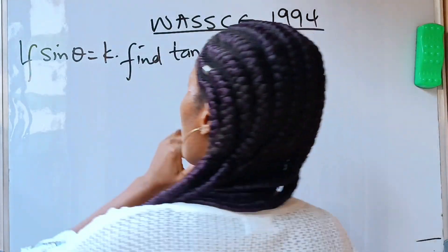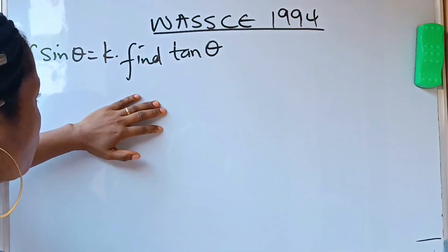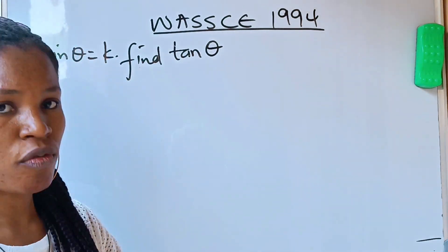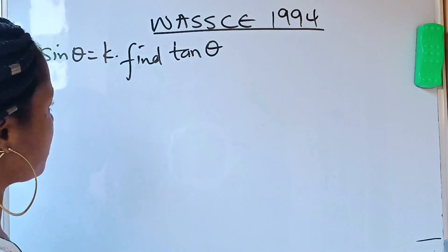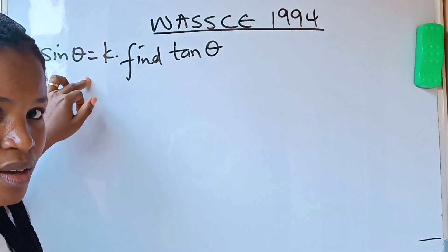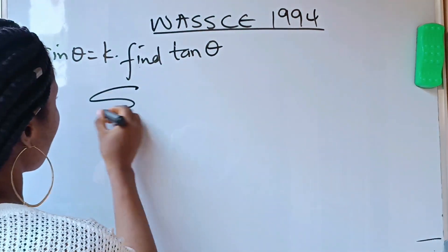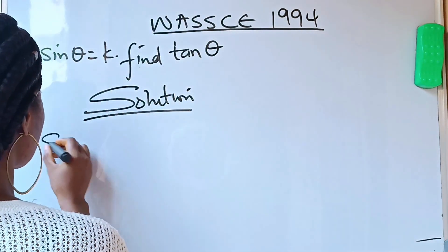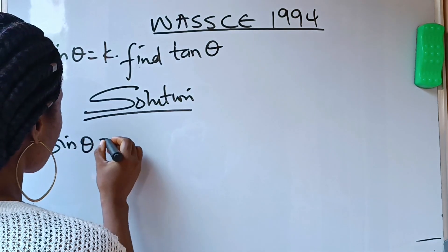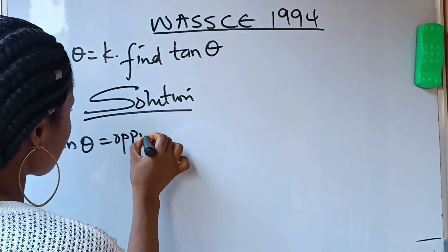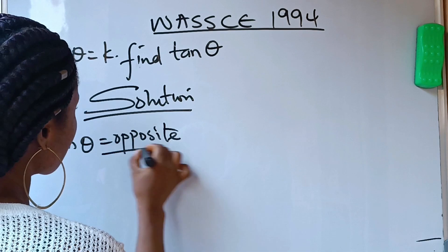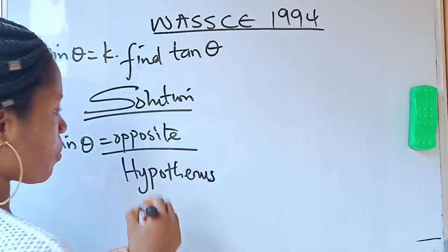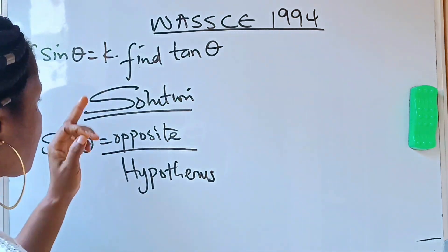Let's do it together. When you look at this particular question, it's true we are not given any number, but what we are given is enough. In trigonometry, sin theta is equal to opposite over hypotenuse.